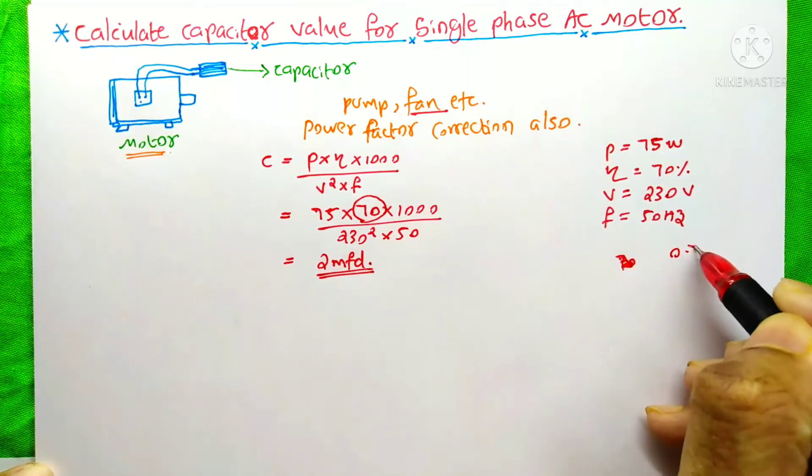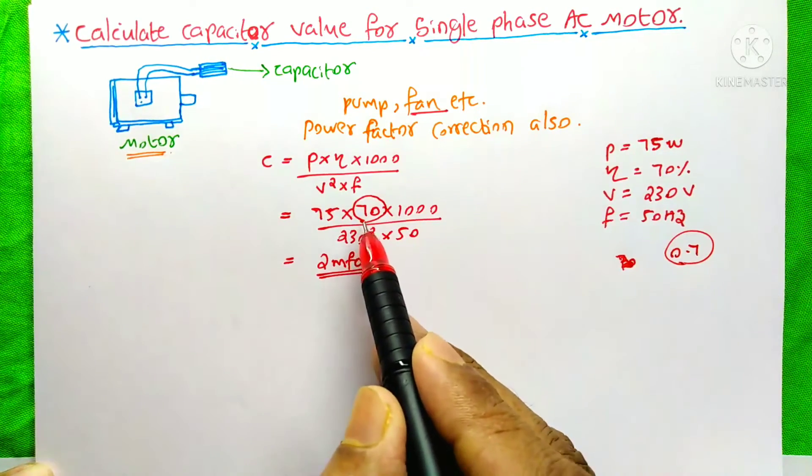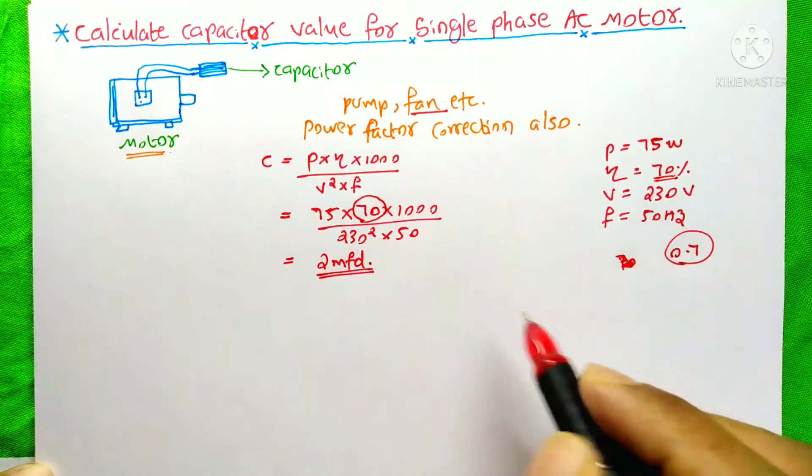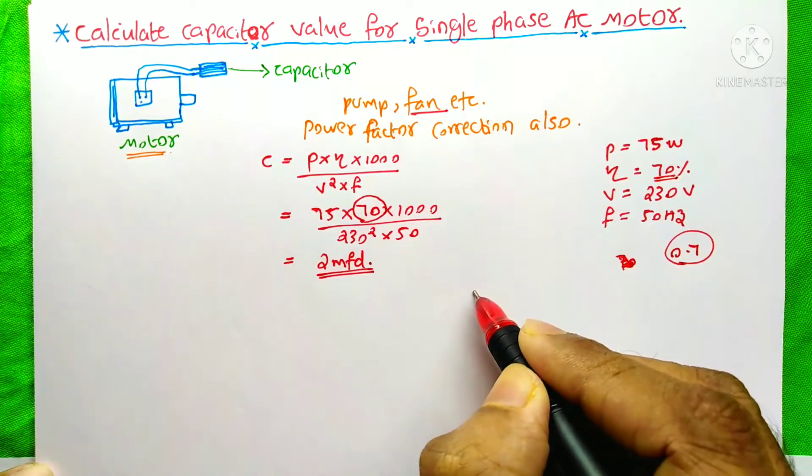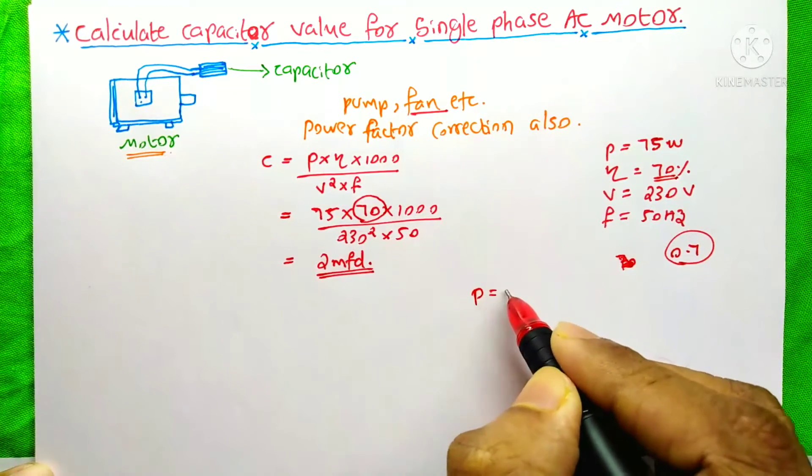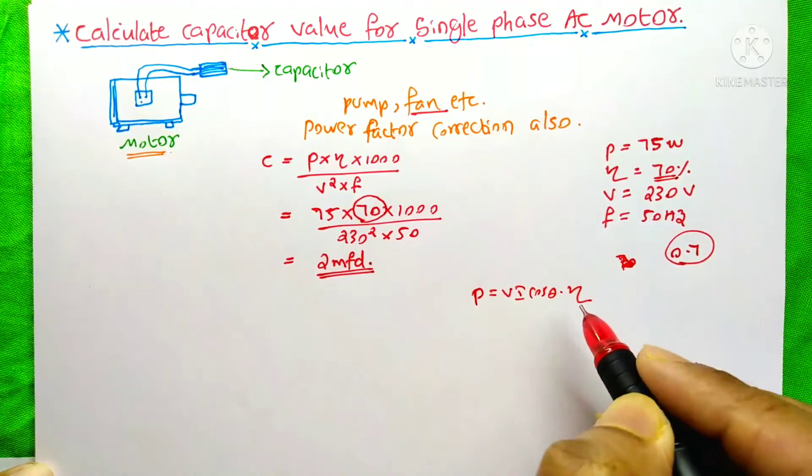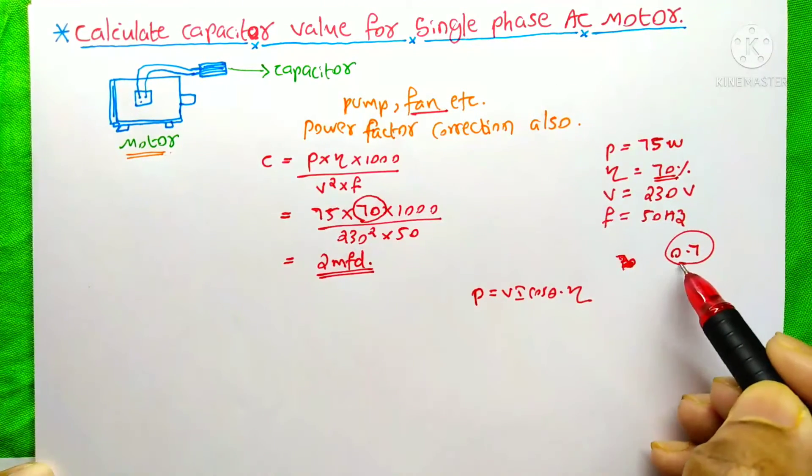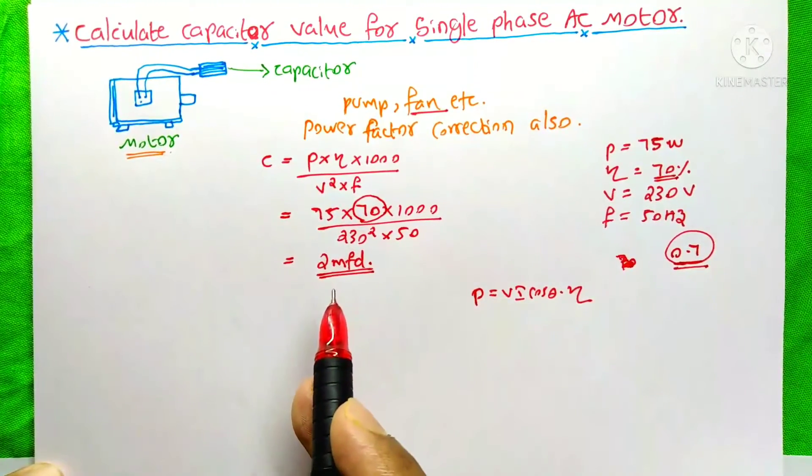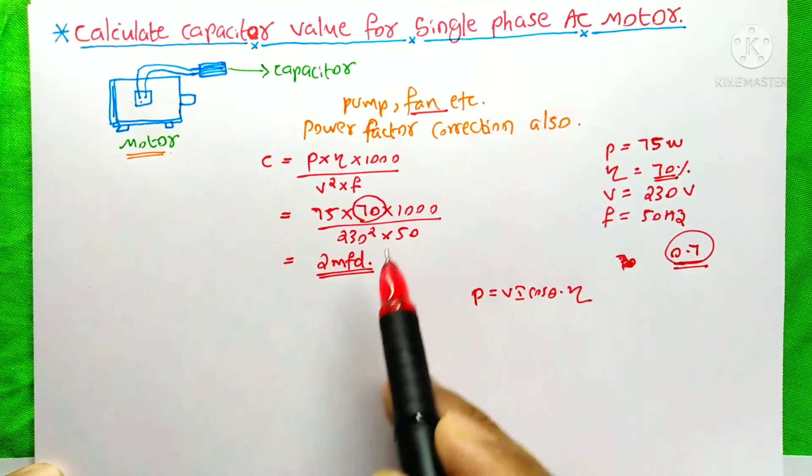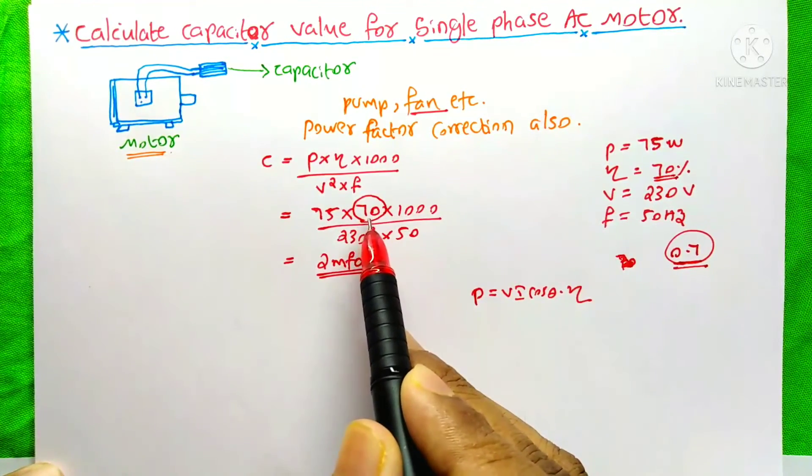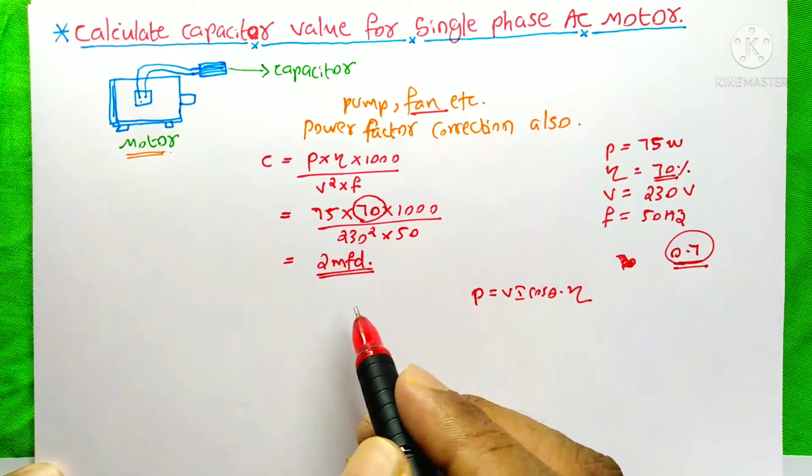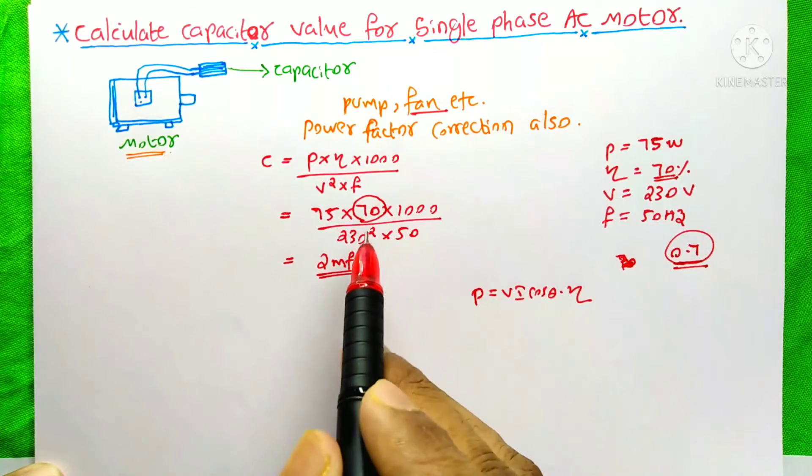In some equations, like the power equation P = VI cos θ × efficiency, if the efficiency is 70 percent, we put 0.7. But in this capacitor equation, don't put 0.7 - we need to put only 70. If you put 0.7 here, you will not get the correct answer, so please keep this in mind.